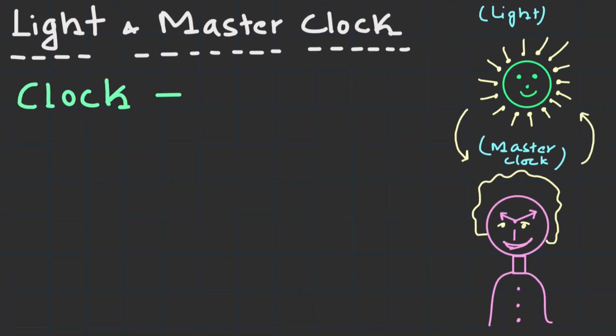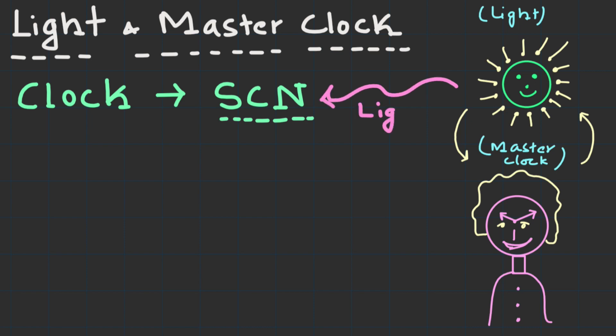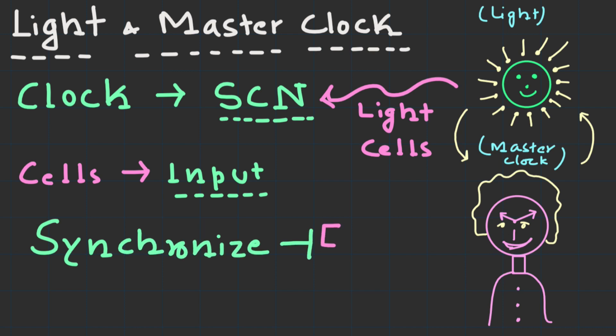The master clock located in the SCN receives input from light-sensitive cells in our eyes. This input helps synchronize our internal clock with the external environment, primarily through the presence and absence of light. When we wake up in the morning, exposure to natural light signals our body that it's time to be alert or awake.